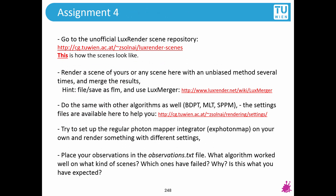So the very last assignment. Please go to this unofficial LuxRender Scene repository - there is also a link below that shows you how the individual scenes look like. Please choose a scene and render it with an unbiased method several times and merge the results together. I hope that you remember from the previous lecture how you can merge together individual runs of unbiased algorithms and hopefully get something better than the individual images.